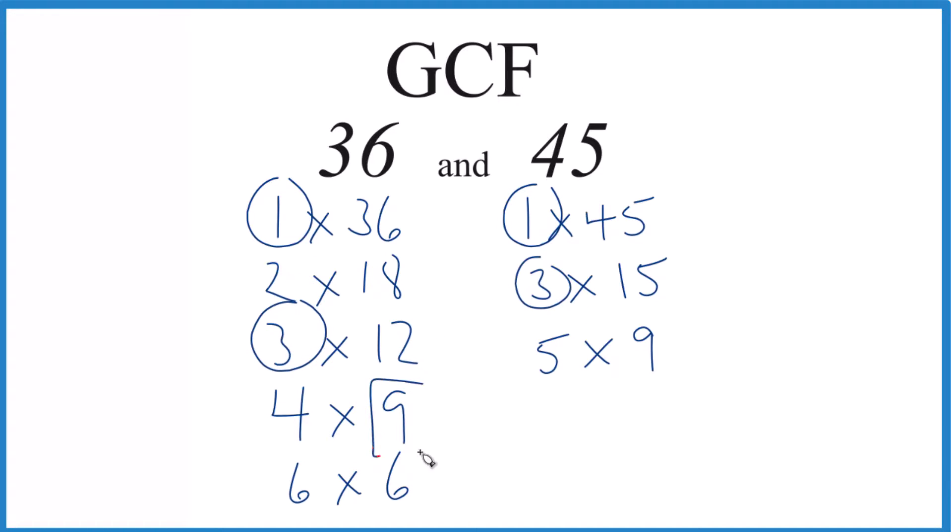And then nine, there's actually nine right here. And nine looks to be the greatest number that goes into 36 and 45. So the GCF for 36, 45, that's nine.